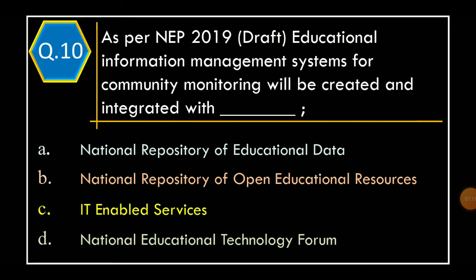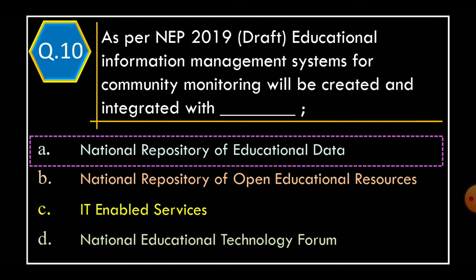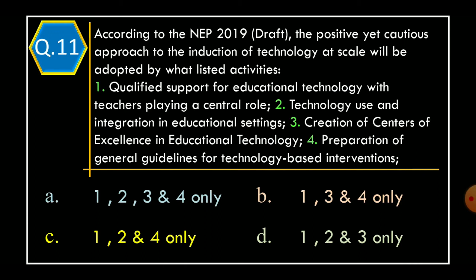Question 10. As per NEP 2019 draft, educational information management systems for community monitoring will be created and integrated with: Option A: National Repository of Educational Data. Option B: National Repository of Open Educational Resources. Option C: IT Enabled Services. Option D: National Educational Technology Forum. The correct option is Option A: National Repository of Educational Data.